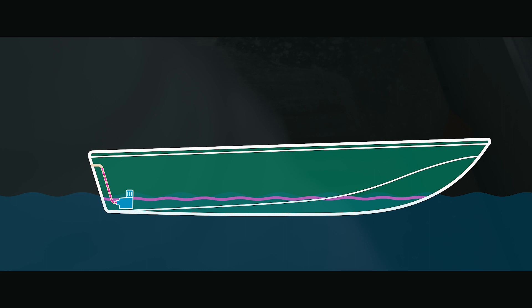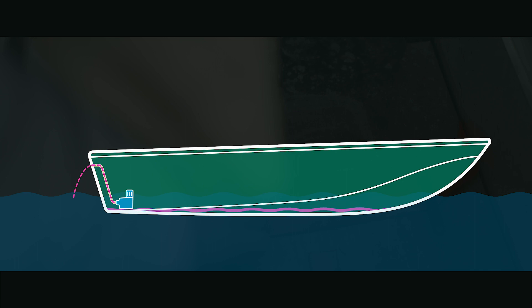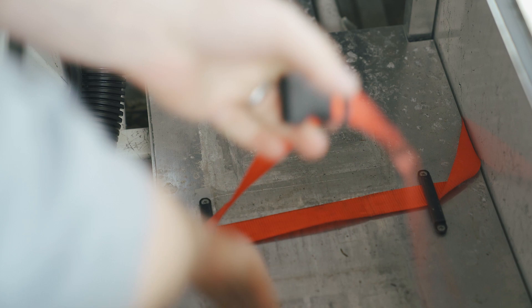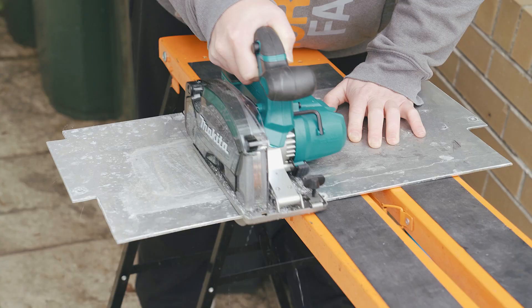To maximise the effectiveness of a bilge, it should be placed at the lowest part of the vessel, generally at the stern, so it can remove as much water as possible. The pump is connected to a hose that's routed to an outlet which sits well above the waterline.